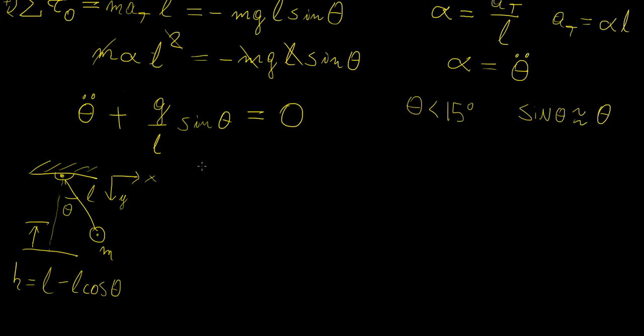So in that respect we can actually write the potential energy in terms of Mgh and then this is of course going to be Mg times L minus L cosine of theta and then we can just simplify this to Mgl times 1 minus cosine of theta. Okay so that's going to be the potential energy for this system.